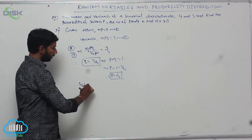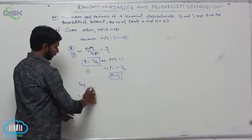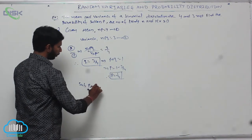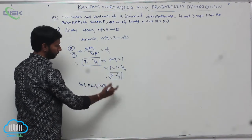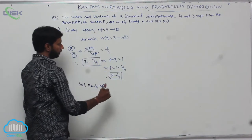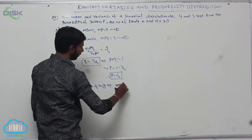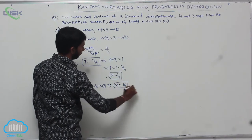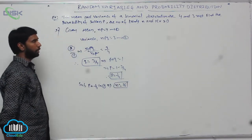Substituting P equal to 1 by 4 into condition number 1 (NP equals 4), that implies N is equal to 16.